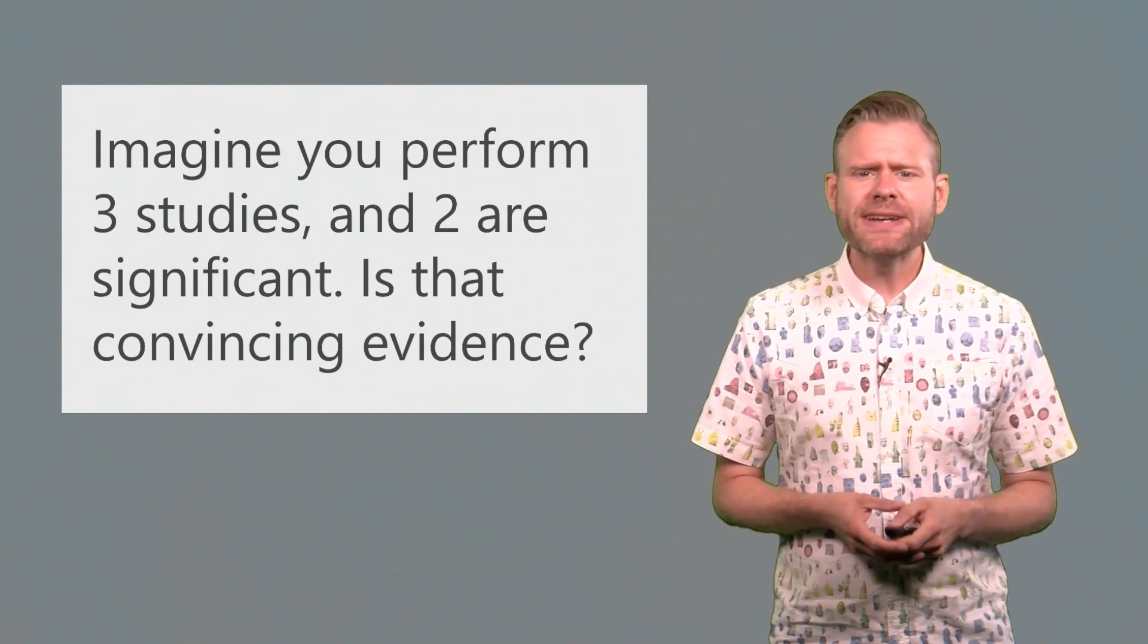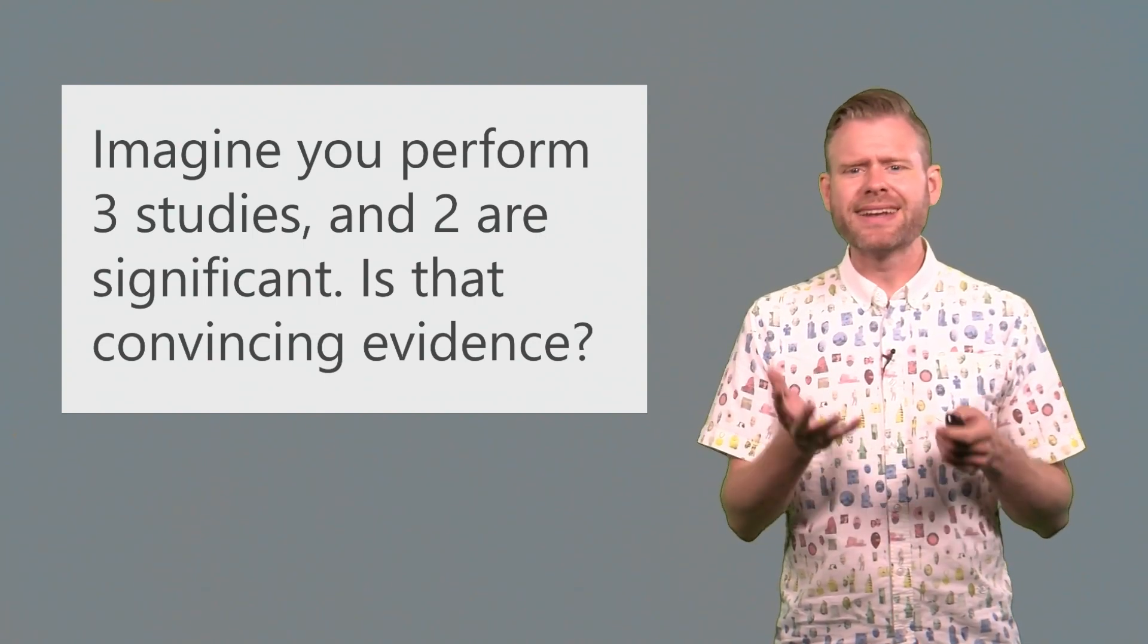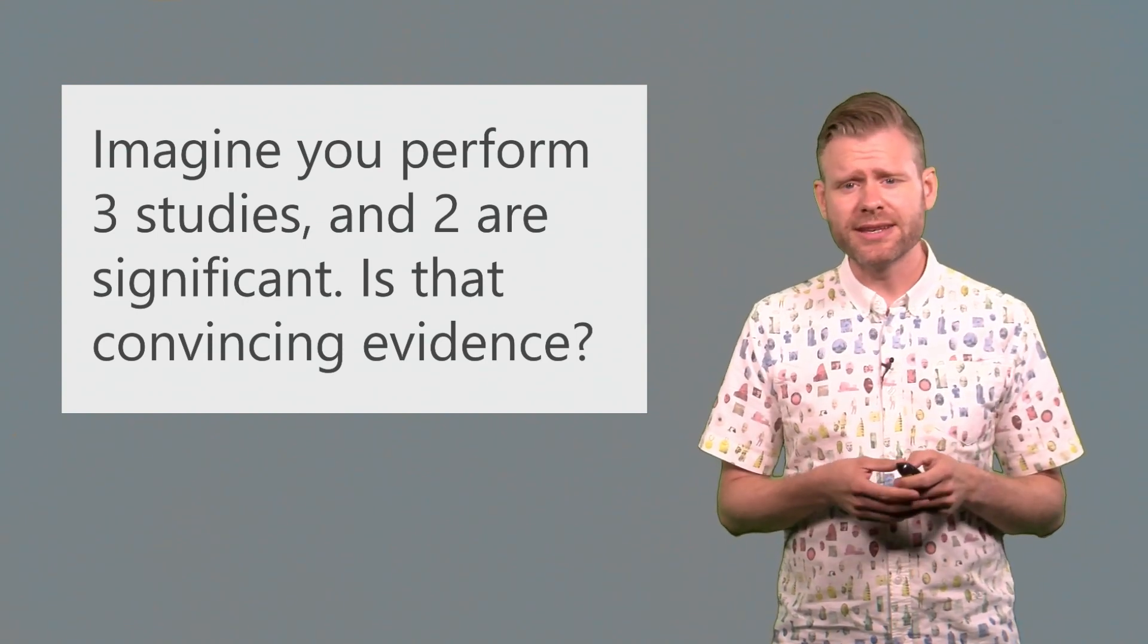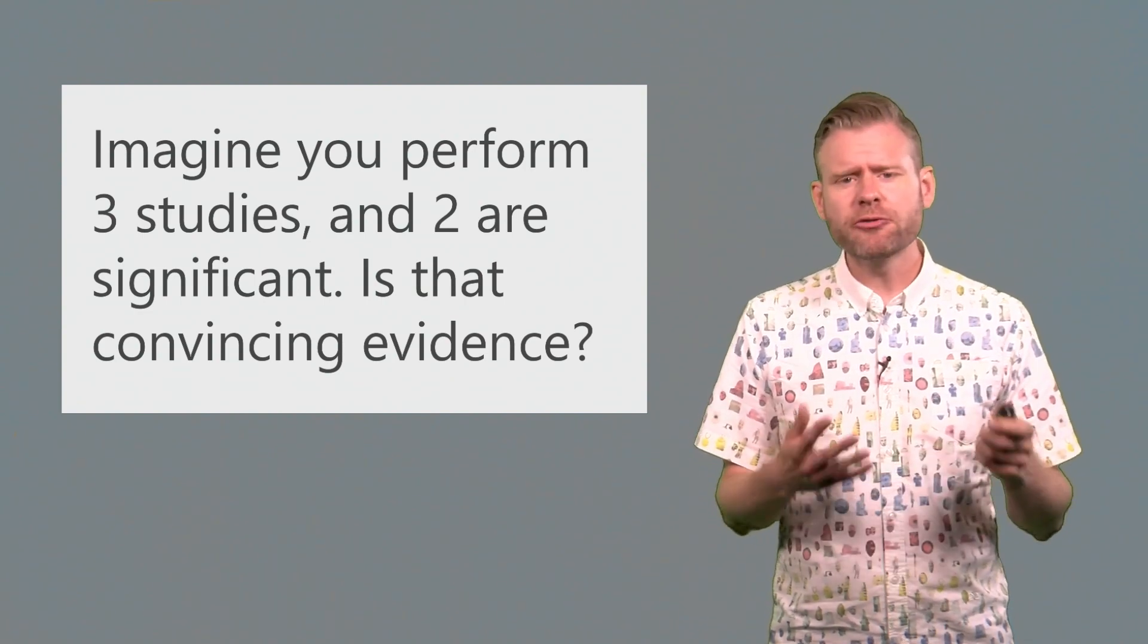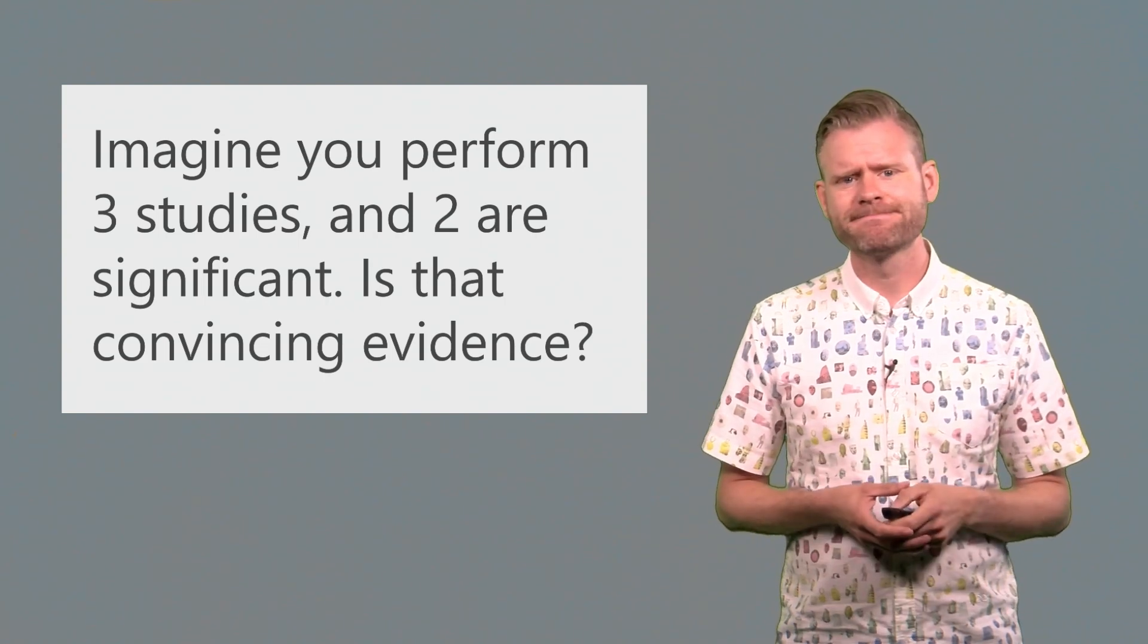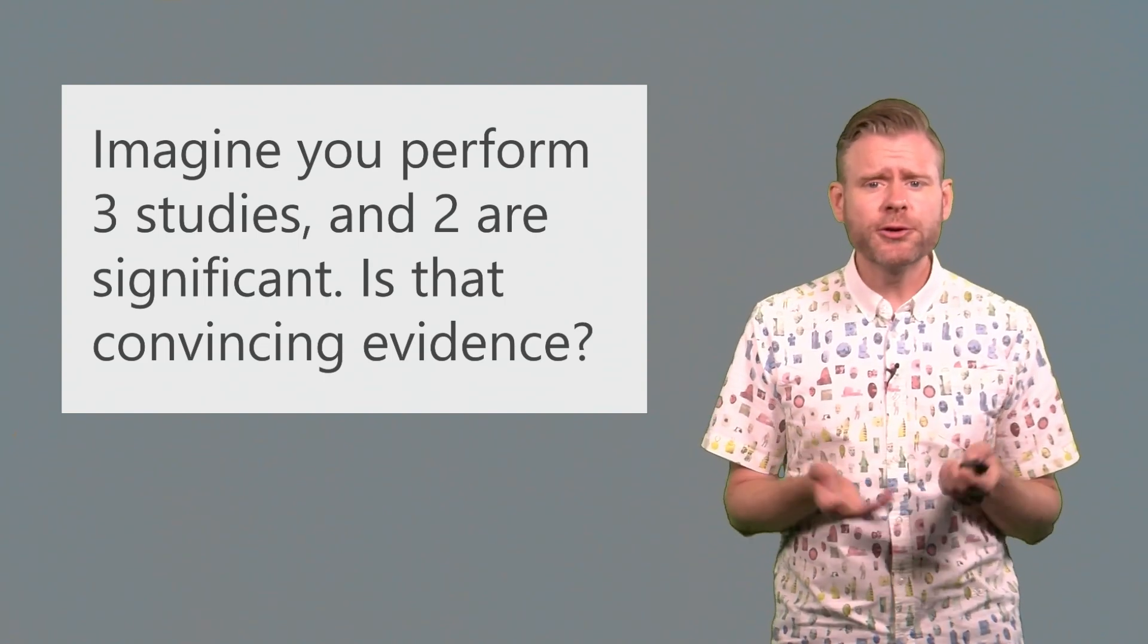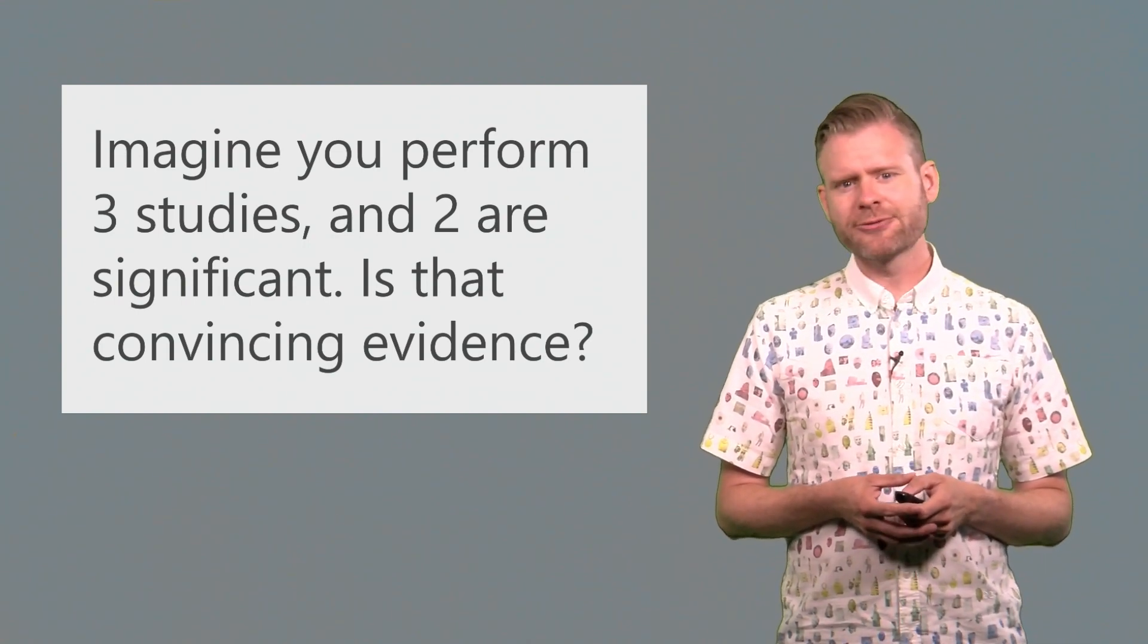Now imagine that you perform three studies in a row. They're very similar, almost identical, maybe some minor variations, but you have no reason to assume that these small variations matter, theoretically speaking. You should find a result in all three of these, if your hypothesis is correct. You observe that two of these are statistically significant, the third one isn't. Would you consider this convincing evidence for an effect?